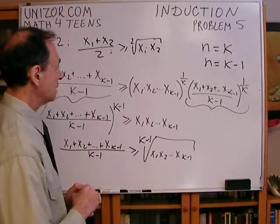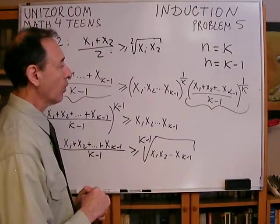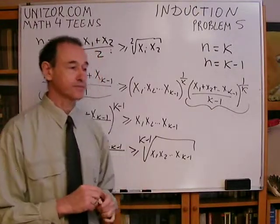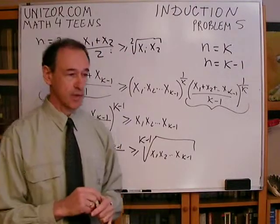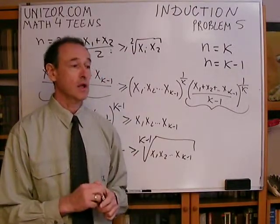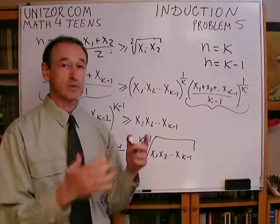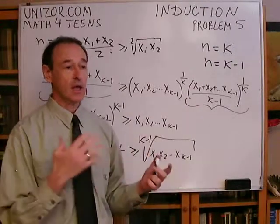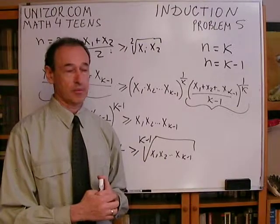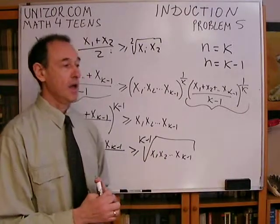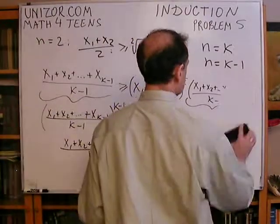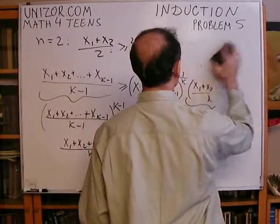That completes the proof of the whole theorem, attributed to French mathematician Cauchy. It's a very interesting theory about the comparison between arithmetic and geometric averages of sets of numbers.